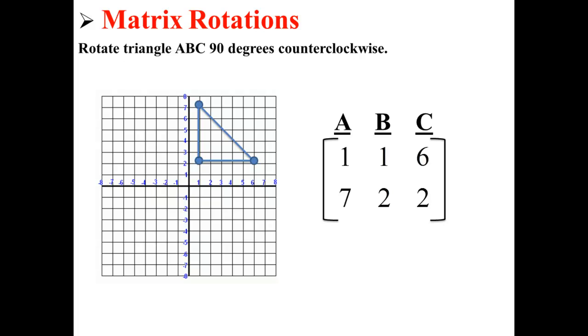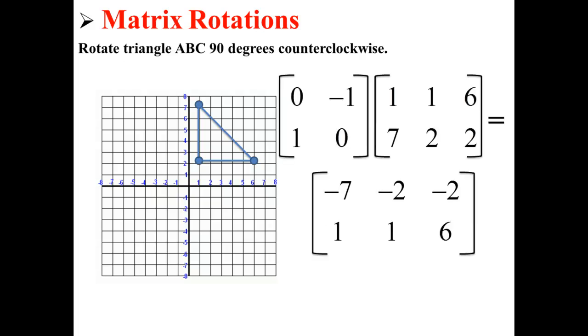Let's say that we want to rotate triangle ABC 90 degrees counterclockwise. Here we take our original vertex matrix and multiply it by the 90 degrees counterclockwise matrix to get a new matrix consisting of points.